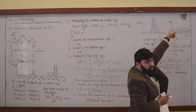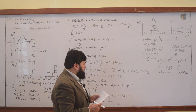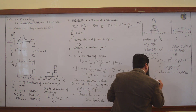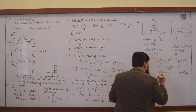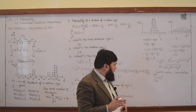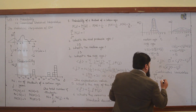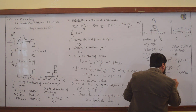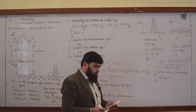They are continuous. So for a continuous distribution, I will say that from minus infinity to plus infinity, |ψ|² — which is the probability density — multiplied by dx, integrated, will be equal to one. This is called the normalization condition.